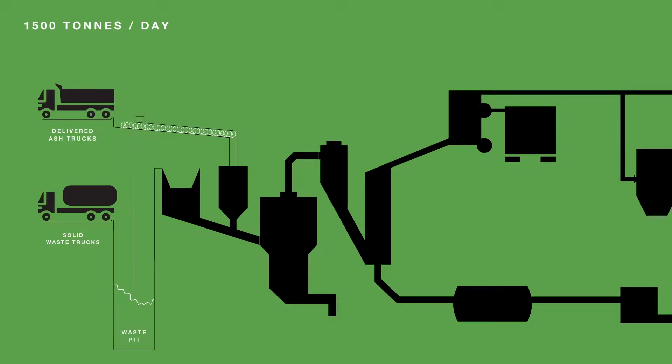To begin the continuous process, trucks of municipal solid waste and delivered ash from a local incinerator pull up to the 1,500-ton-a-day facility. The solid waste trucks are weighed and dumped into the waste pit. The delivered ash trucks are emptied into the ash storage silo.